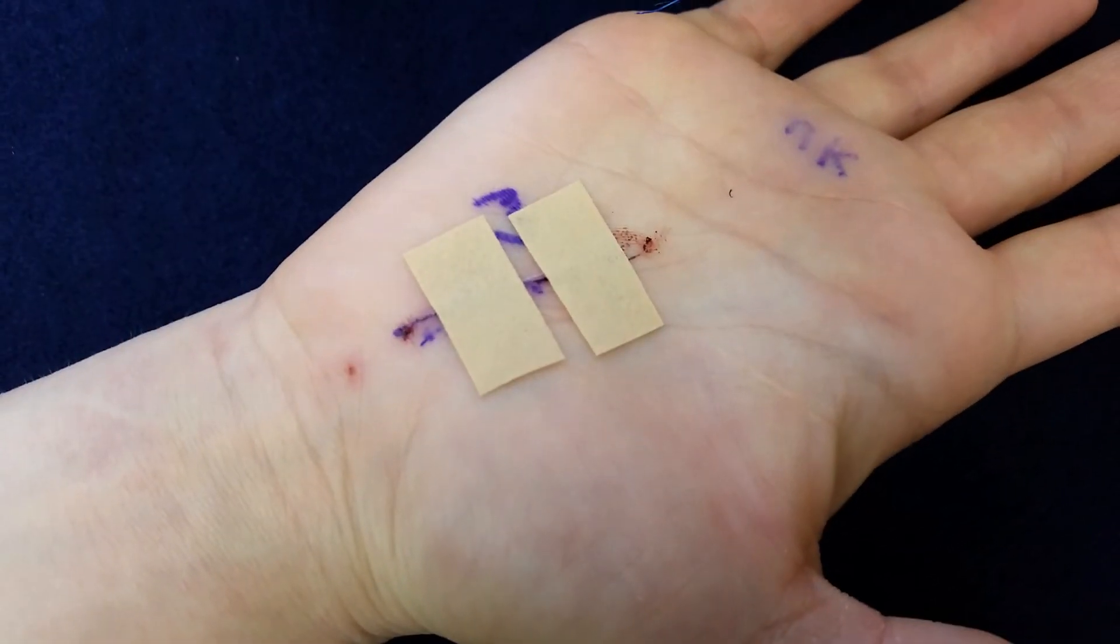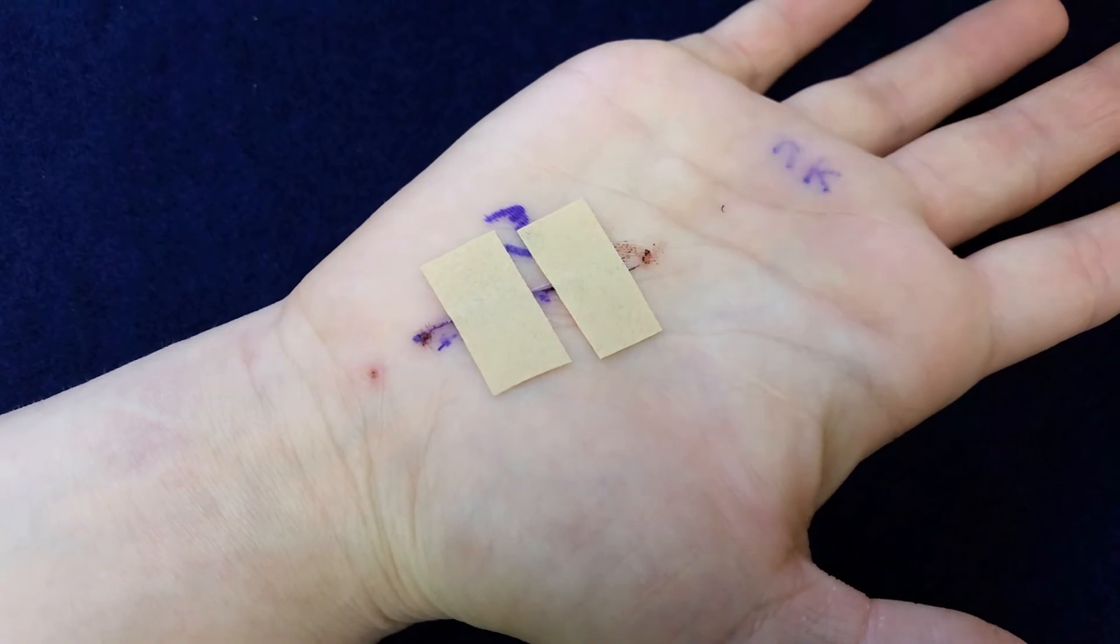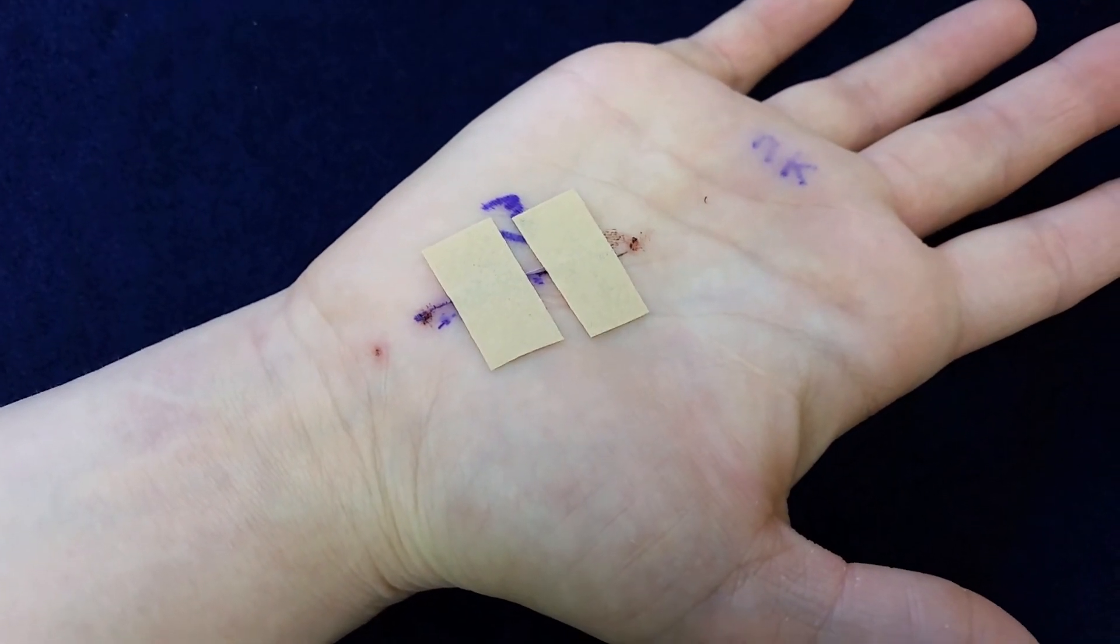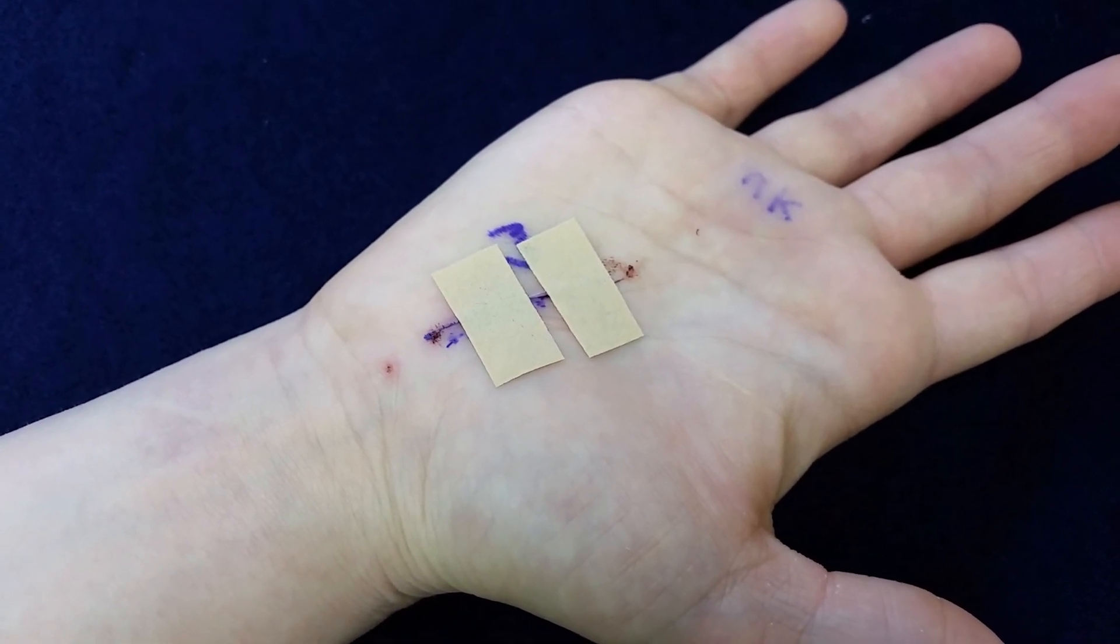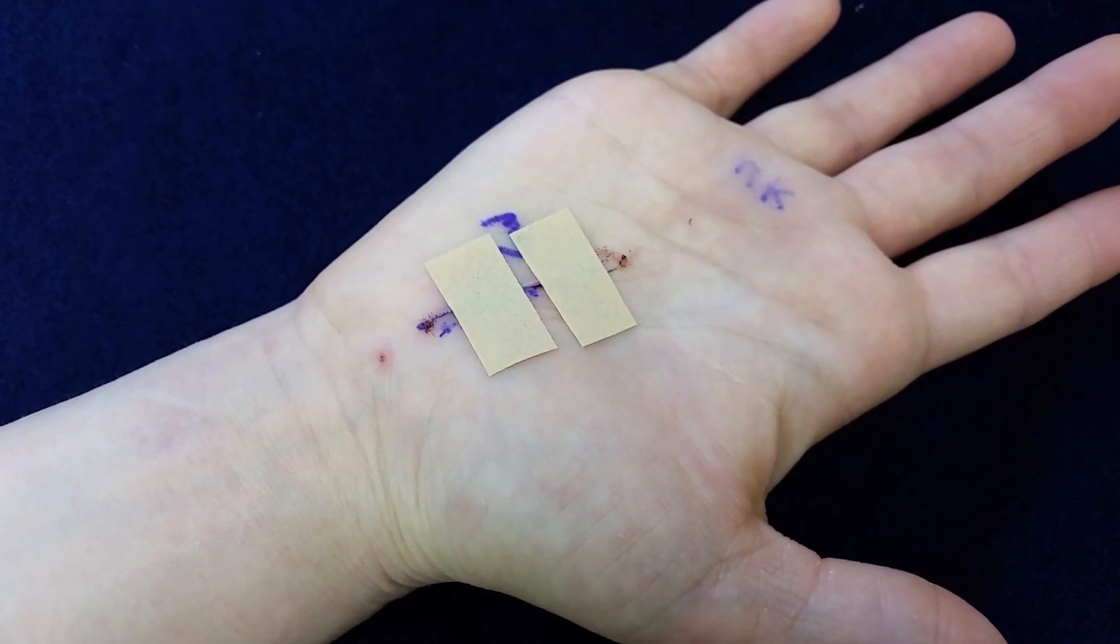And what you can see is the incision line nicely clean, dry and intact, no gapping. We've put on butterfly tapes just to take a little bit of tension off the skin, and that's how you take out a running subcuticular proline suture from the incision.